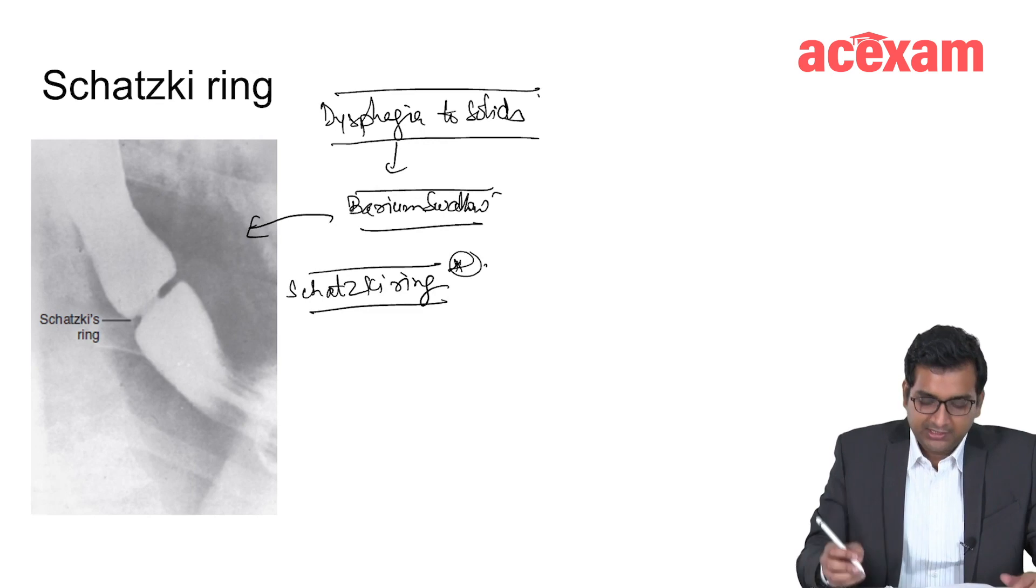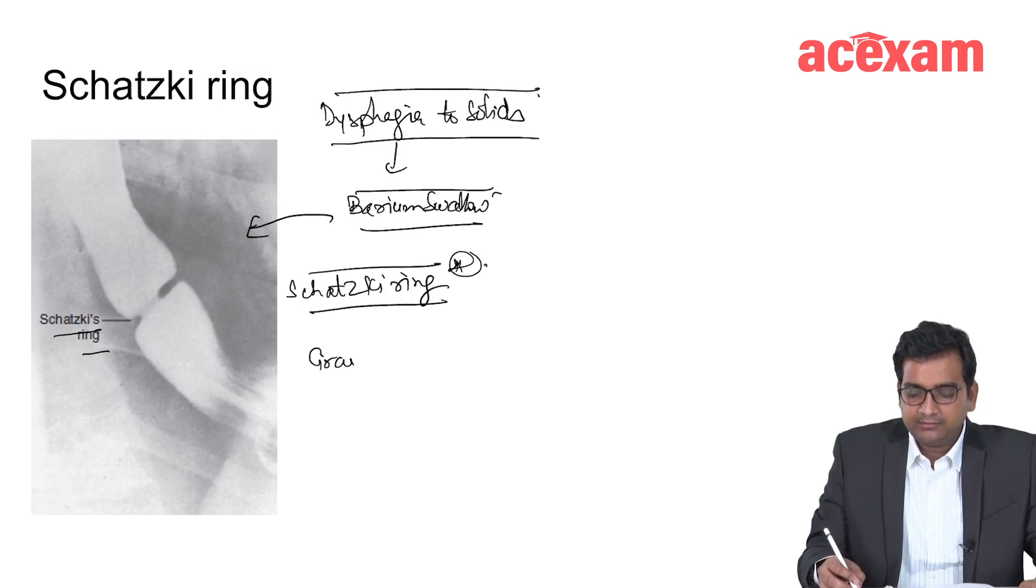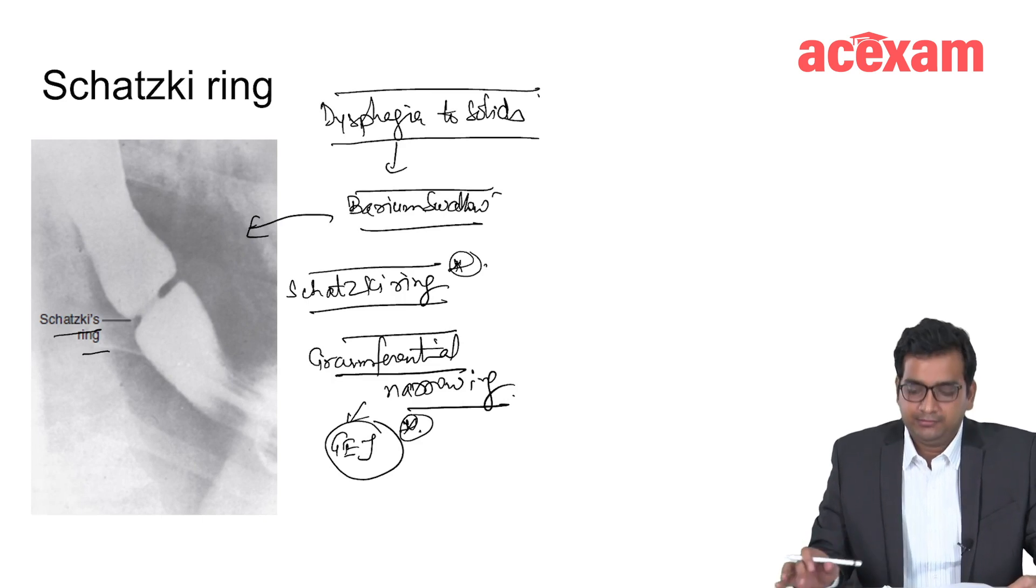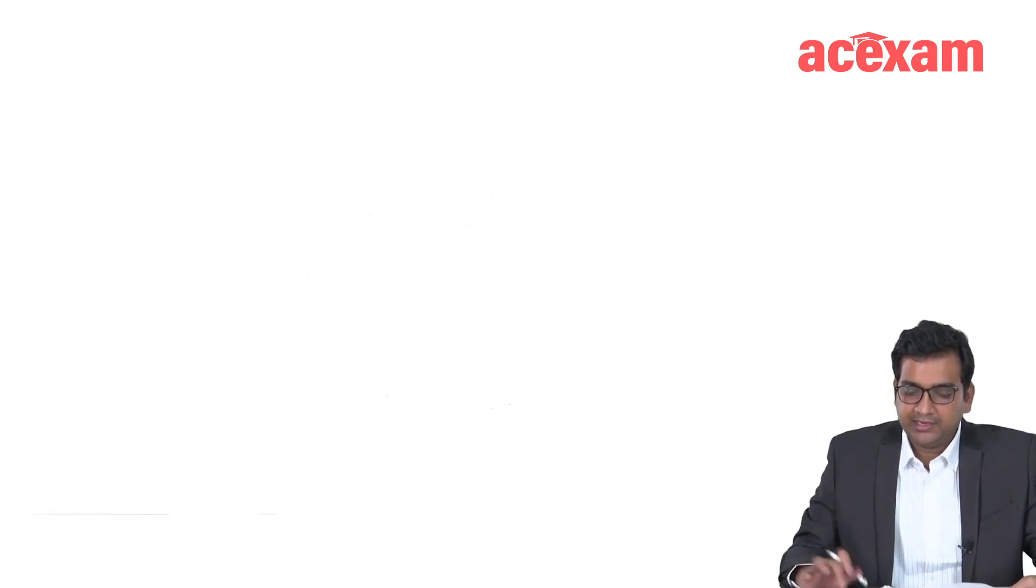What is the classical finding? That there is a circumferential narrowing, generally present at the gastroesophageal junction. So this is what is Schatzky ring.